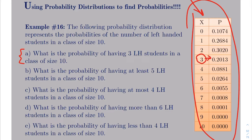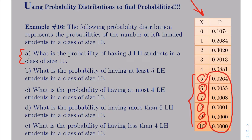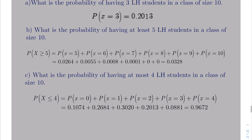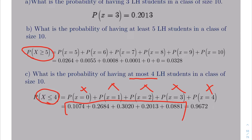Look at another one: what is the probability of having at least five left-handed students? At least five means five or six or seven, eight, nine, and ten. So if you want to find that probability, you just add those probabilities together. To find a probability of at least five, you say it's the probability of five plus six plus seven all the way to ten. Or if it says find a probability of at most four, that's less than or equal to four — zero, one, two, three, and four — and you only add those probabilities.